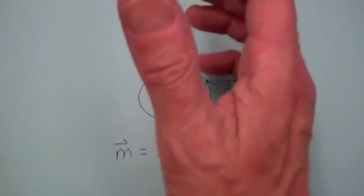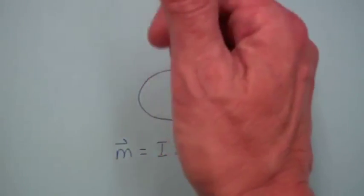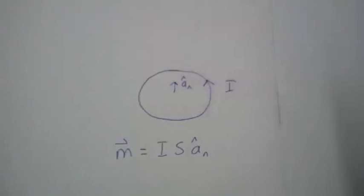where if you put the fingers of your right hand in the direction the current is going, your thumb will point in the direction of this unit normal.